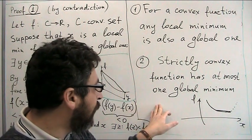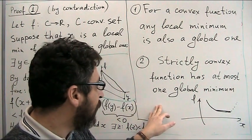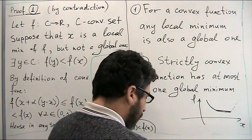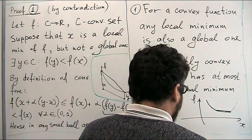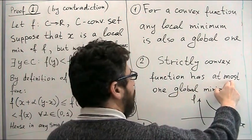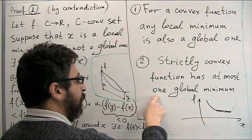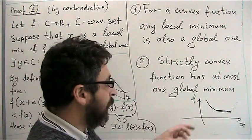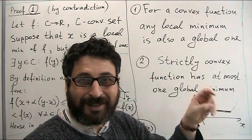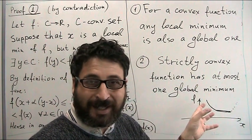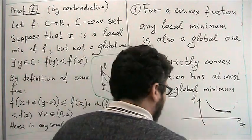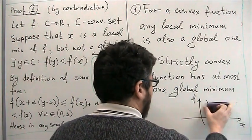The second claim is that if a convex function is strictly convex, then it has at most one global minimum. Pay attention — at most one, so it either has one global minimum or may have no global minimum. Let's try to understand this graphically.